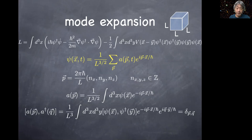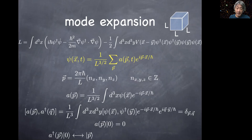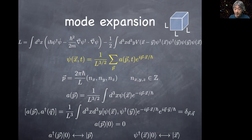The end result is the Kronecker delta between momenta p and q. I chose the normalization factor of 1 over L to the three-halves so that the a, a-dagger commutator gives 1 when two momenta are the same. This is clearly the algebra of harmonic oscillator creation and annihilation operators. We define the ground state or vacuum state by requiring that it is annihilated by the annihilation operator, then create a one-particle state using the creation operator.